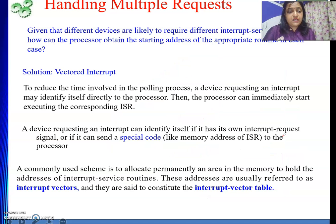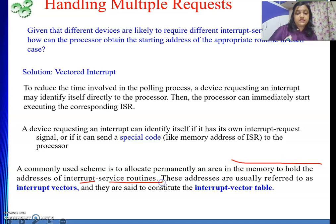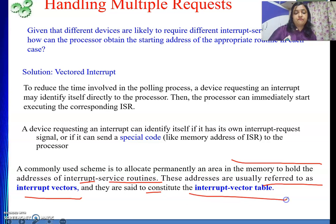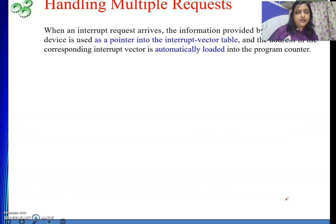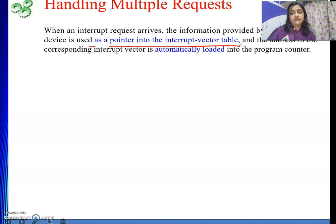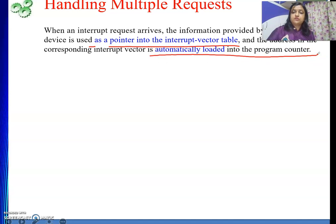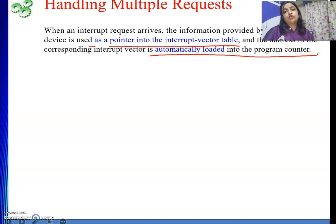This is a very beautiful technique. A commonly used scheme is to allocate permanently an area in memory to hold the addresses of interrupt service routines. These addresses are referred to as interrupt vectors, and they constitute the interrupt vector table. When an interrupt request arrives, the information provided by the requesting device is used as a pointer into the interrupt vector table, and the address in the corresponding interrupt vector is automatically loaded into the program counter. The first instruction executed is then the very first instruction of the interrupt service routine — this is how control moves to the ISR.